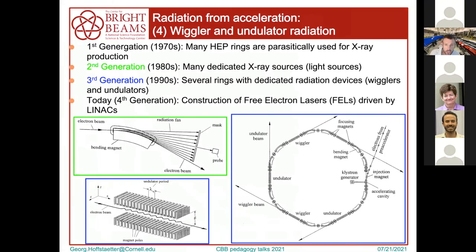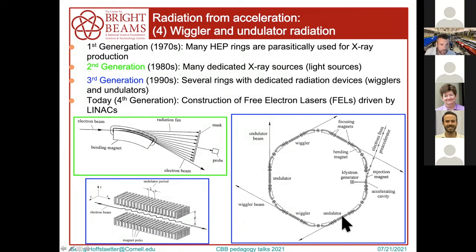Light sources usually don't use bend radiation itself — they use a storage ring with many bending magnets to guide the electrons in a circular orbit. Between the bends there are undulators that enhance the radiation. An undulator or wiggler has many small bends so that in every bend the 1/γ cone shoots out, and you add many of these cones together to enhance the radiation.